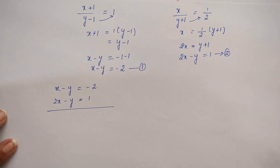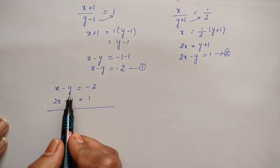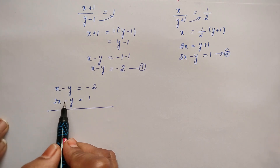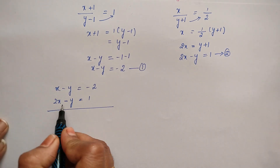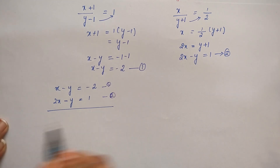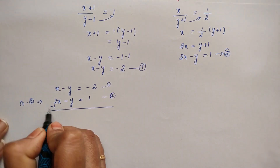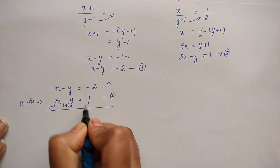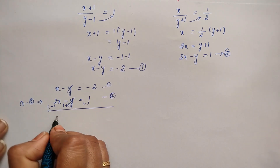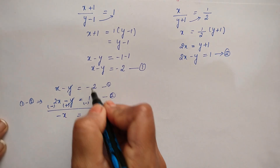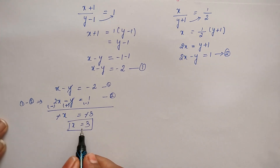Let's solve it now using the elimination method. We will eliminate y. Equation 1 is x minus y = minus 2, and equation 2 is 2x minus y = 1. Subtracting equation 1 from equation 2: x minus 2x gives minus x equal to minus 2 minus 1, so minus x equal to minus 3, therefore x equal to 3.